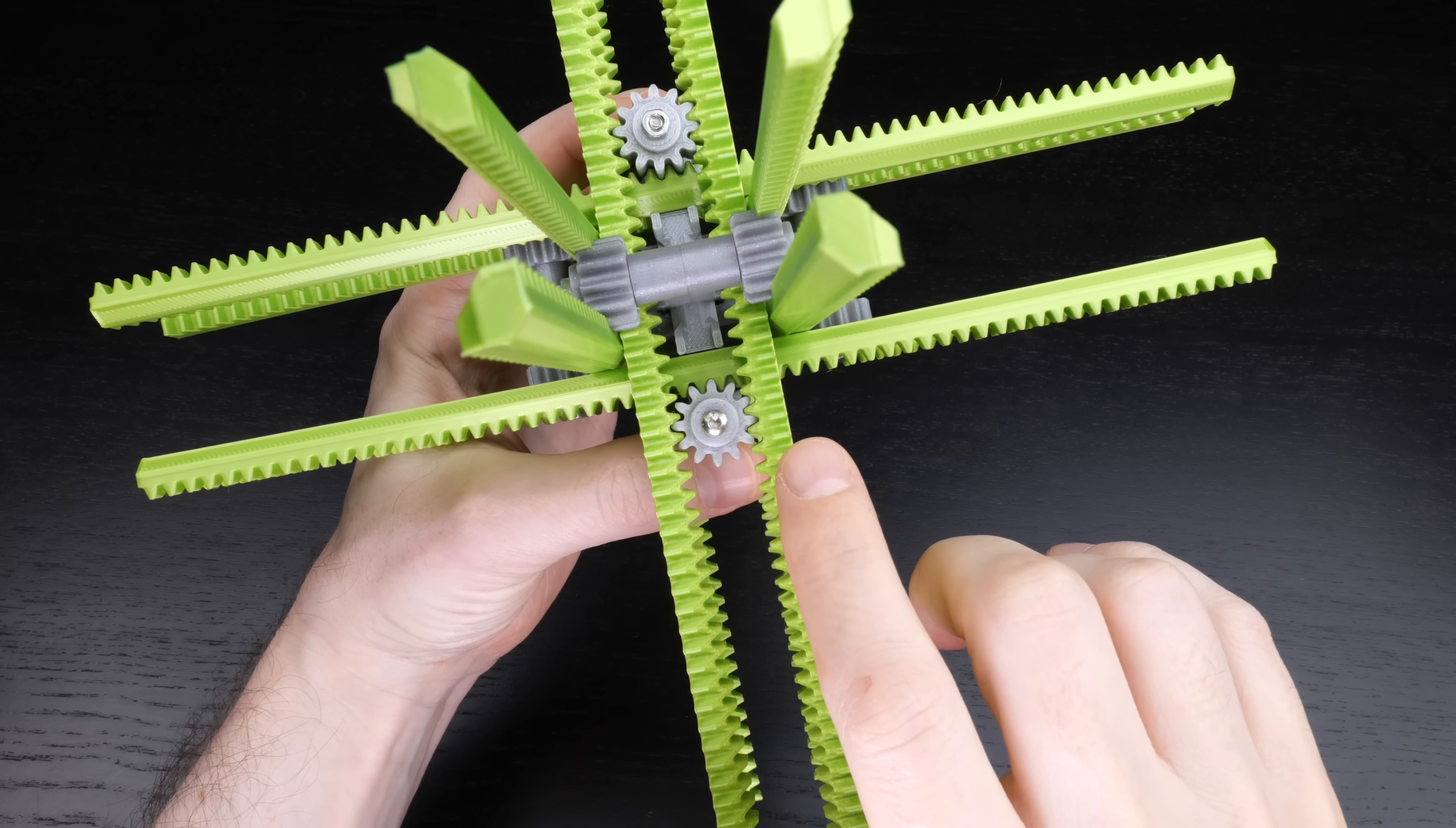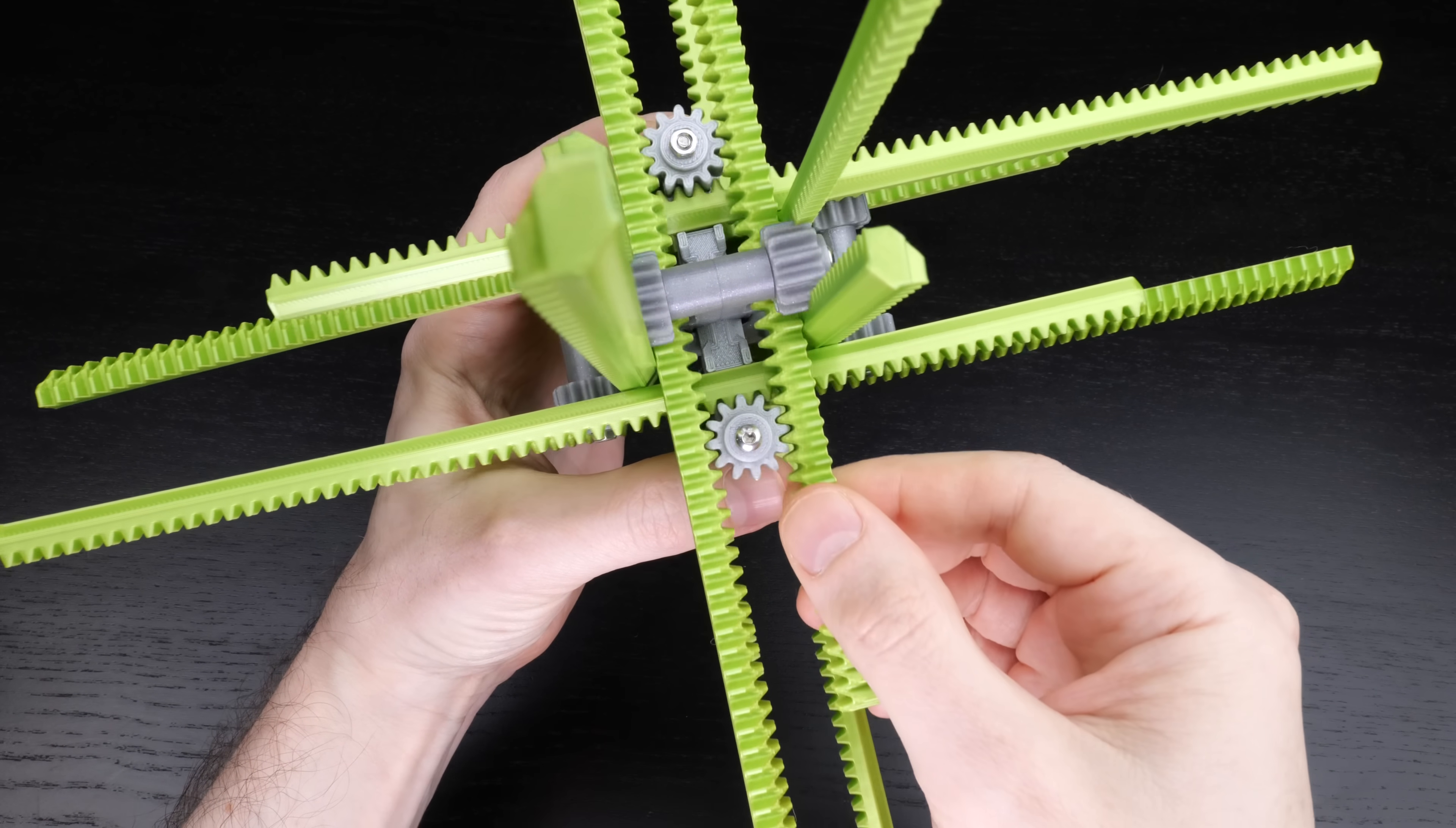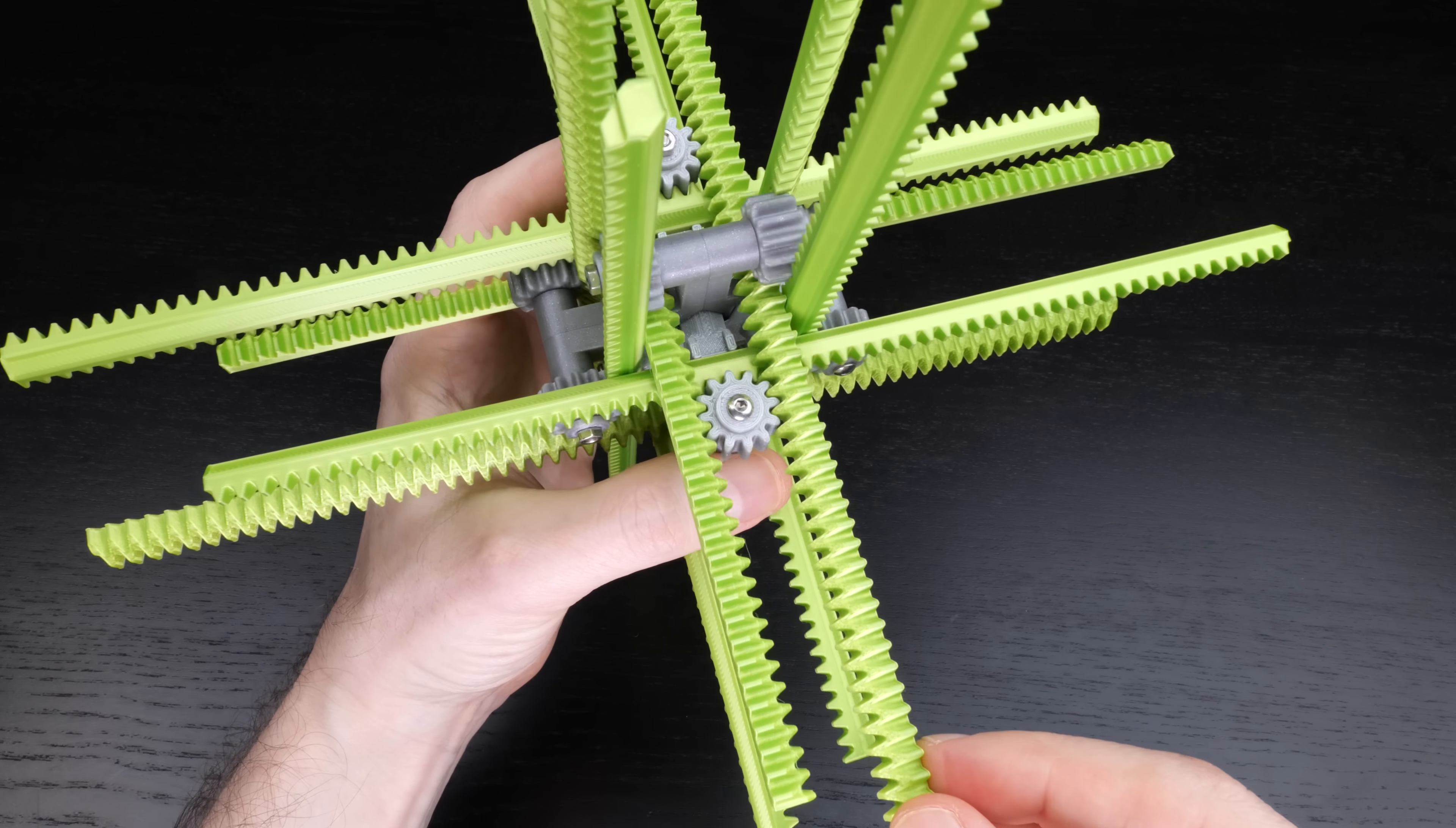However, with a gear connecting the three sticks together, everything moves in the correct direction and it just works. So yes, it's cheating to use gears and a core, but whatever. I made the rules so I can break them too.